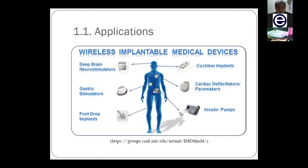There are many different kinds of implantable medical devices that we may come across, especially in hospitals. Some examples include insulin pumps, cardiac defibrillators or pacemakers, cochlear implants, deep brain neurostimulators, gastric stimulators, and foot drop implants. These are just some of the many kinds of IMDs that we may use one day when we get sick. I'll give a brief explanation of each of these commonly used IMDs in the subsequent slides.